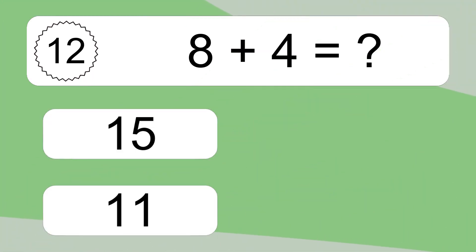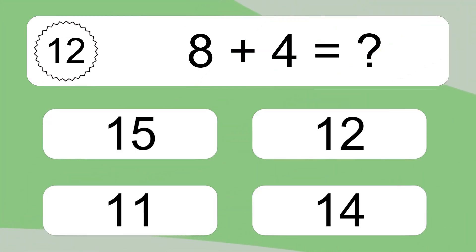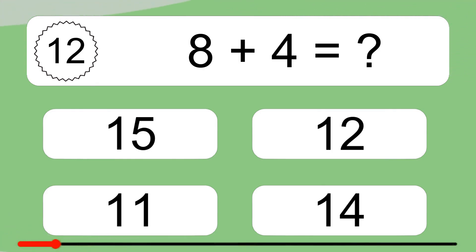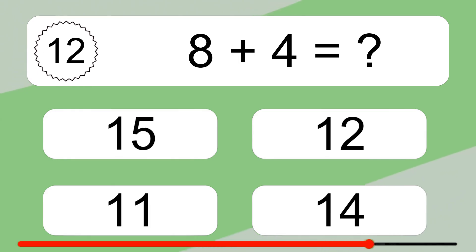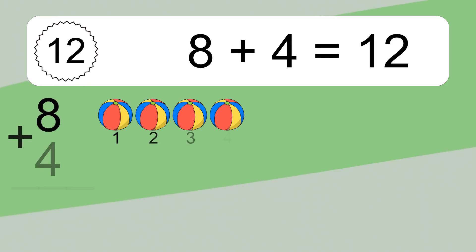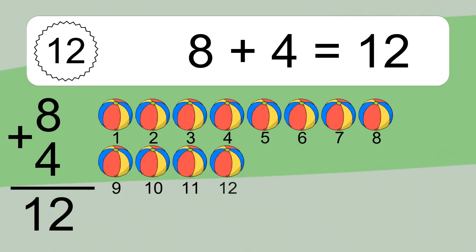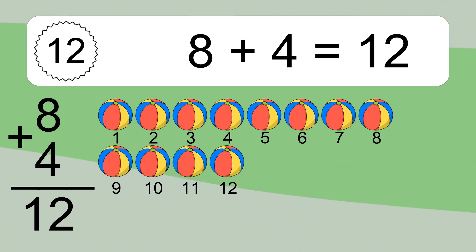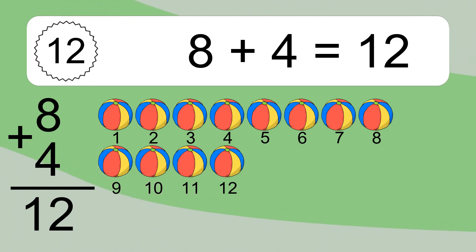8 plus 4 equals what? 8 plus 4 equals 12. Let's count it. 1, 2, 3, 4, 5, 6, 7, 8, 9, 10, 11, 12.